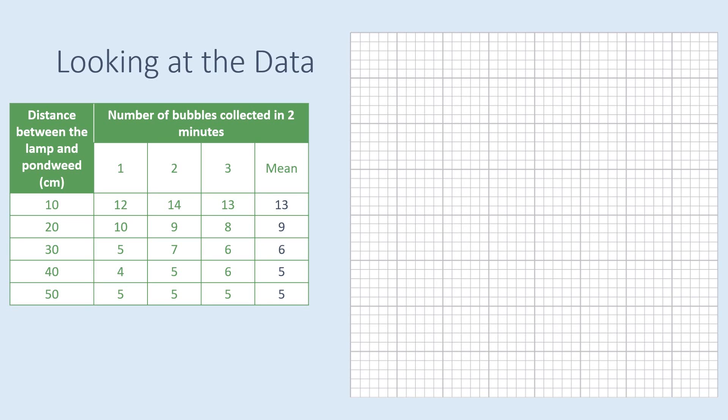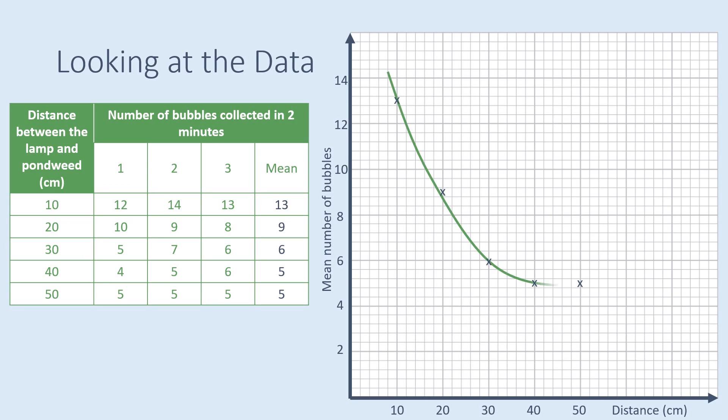Plotting the data would look something like this. You can clearly see that there's a negative trend but it's not a straight line, it's a curve going down.